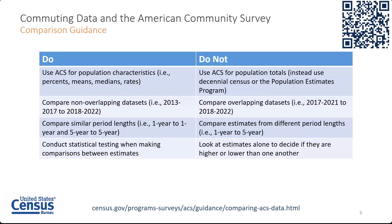In general, the Census Bureau recommends that you compare estimates from non-overlapping periods. For example, compare a 2013-2017 ACS five-year estimate to a 2018-2022 ACS five-year estimate. Do not compare overlapping periods — so do not compare a 2017-2021 ACS five-year estimate to a 2018-2022 ACS five-year estimate. Do compare similar period lengths: compare one-year estimates to one-year estimates or five-year to five-year, but do not compare estimates from different period lengths. The comparison guidance page provides broad information about comparing ACS estimates across years and with the 2010 and 2020 Census.